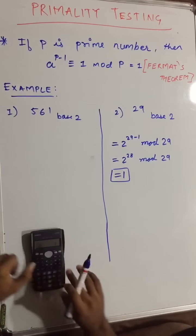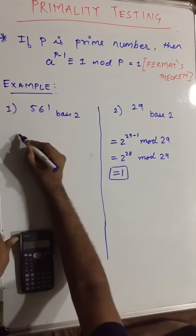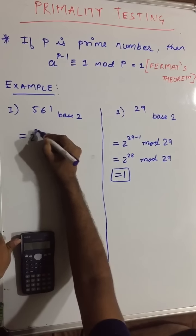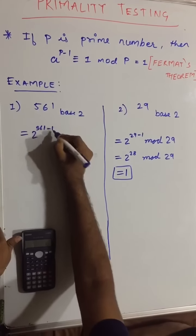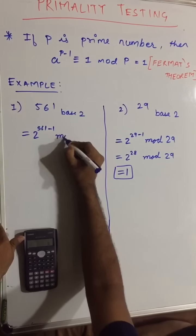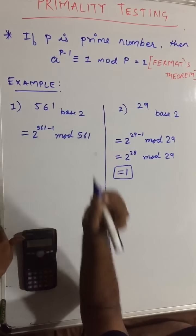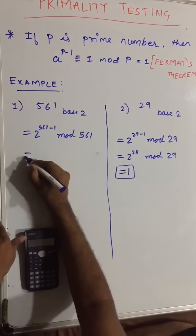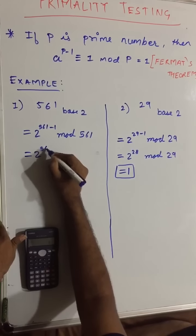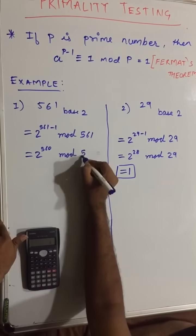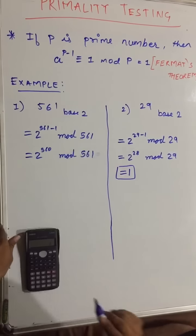It says that 561 base 2. So we can write it as 2 raised to 561 minus 1 mod 561, which will be equal to 2 raised to 560 mod 561.